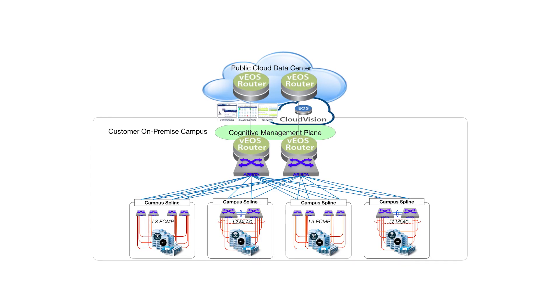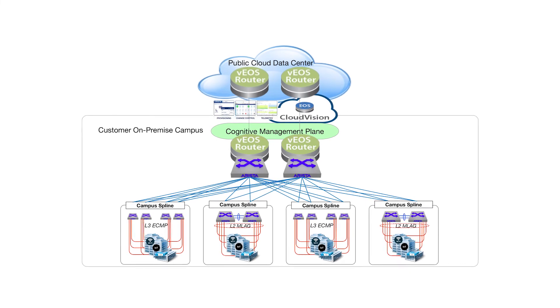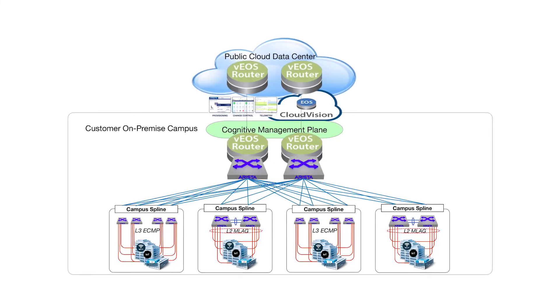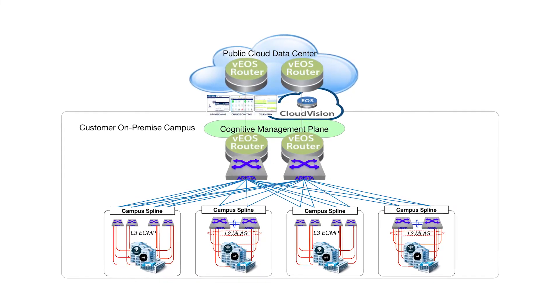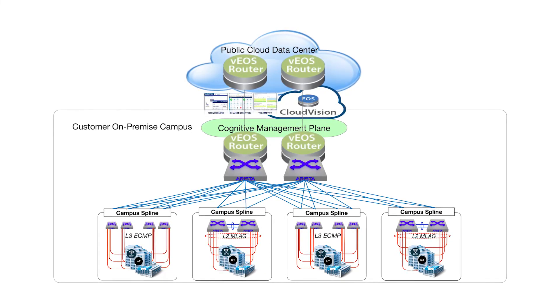There's one last design scenario for customers that don't have an on-premise data center. The beauty here is that we can enable the same leaf-spine topology with the campus spine and simply instantiate a VOS router to connect your on-premise environment to the public cloud, leveraging all the cognitive management plane benefits you'd get for an on-premise deployment as well. As you can see, we can accommodate just about any physical topology with the cognitive management plane and UCN campus design. Arista continues to innovate with the cognitive management plane, now delivering integrated cloud solutions for the universal cloud network campus.